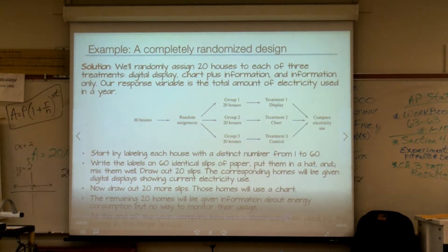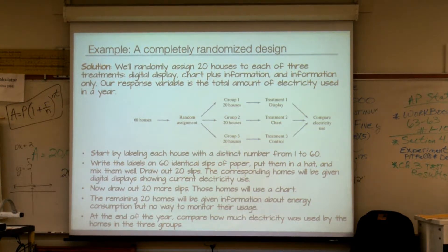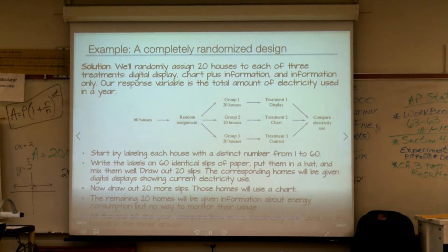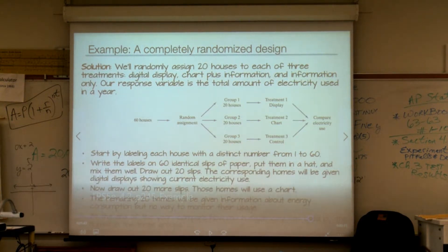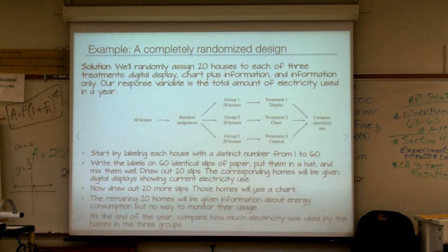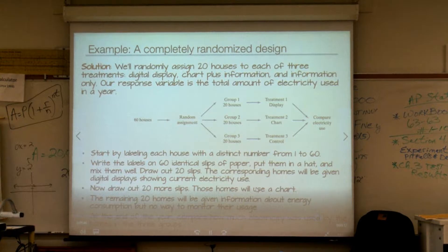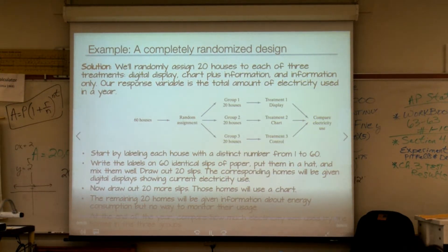At the end of the year, we'll compare how much electricity was used by the homes in the three groups. This is a complete description of a completely randomized design — notice we have a chart and we have a verbal description. If you encounter a problem like this on the AP exam, you won't get full credit if you only provide the chart. Make sure you provide some verbal description as well. For additional practice, try exercise 65.